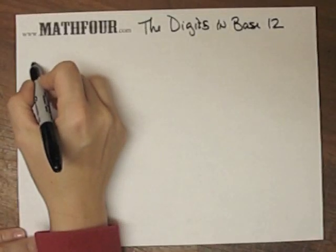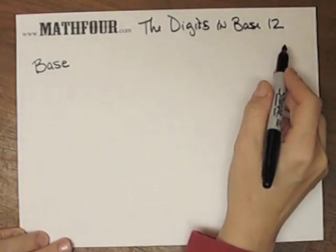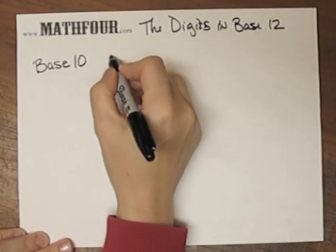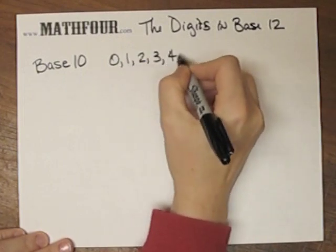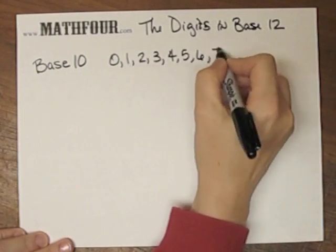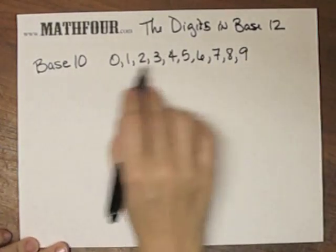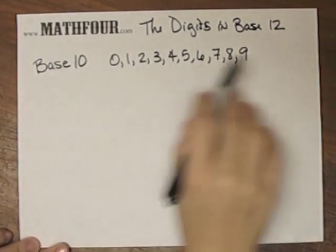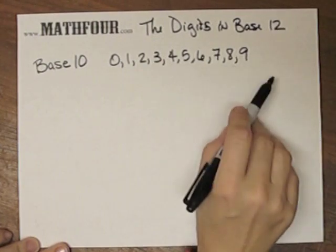So we're talking about base 12 and the digits that we use. First of all in base 10 we use the digits 0, 1, 2, 3, 4, 5, 6, 7, 8, 9. So we have 10 digits all together. And what comes after 9 is 1 set of 10 and 0 singles.